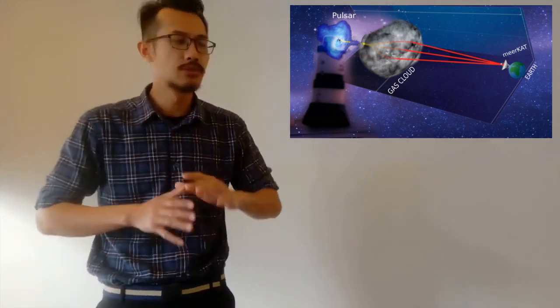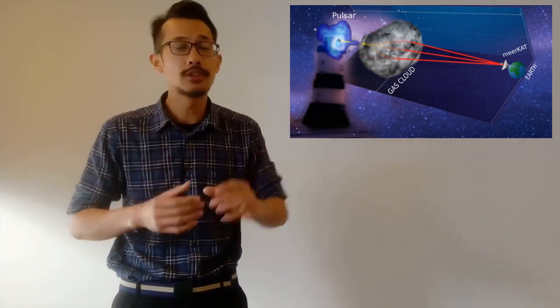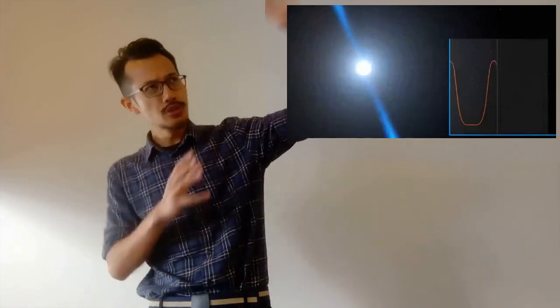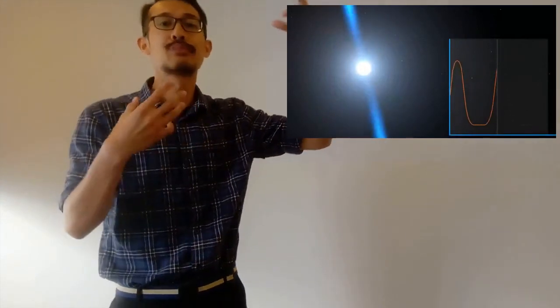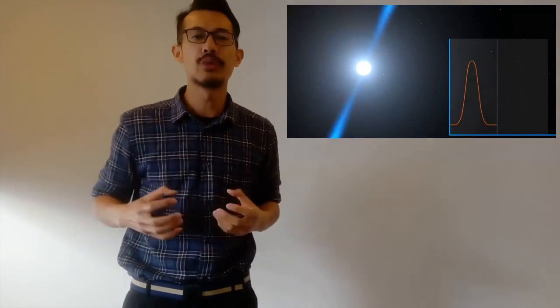By measuring, modeling, and removing this interstellar birefringent delay, we are better able to see the pulsar through the storms of ionized gas, thus improving their timing measurements that can detect gravitational waves created by colliding supermassive black holes somewhere in the universe.